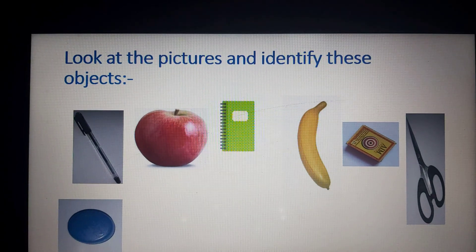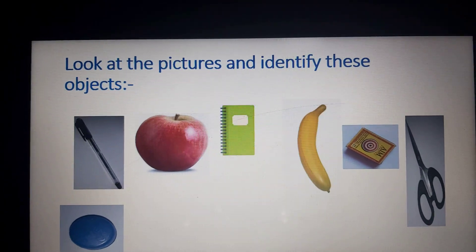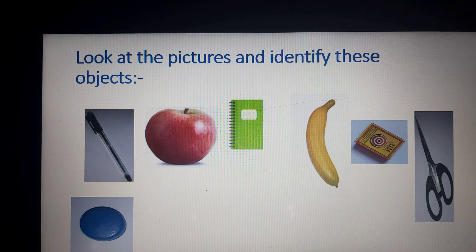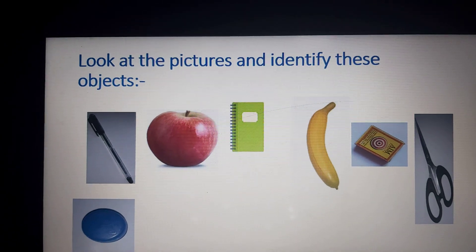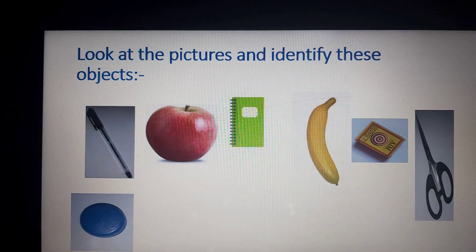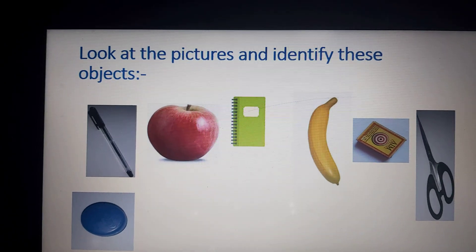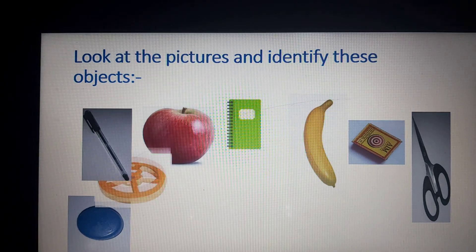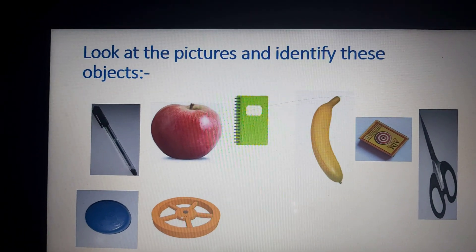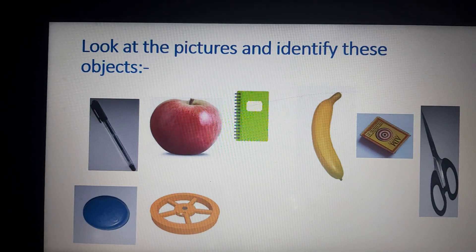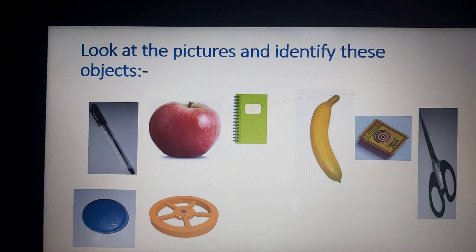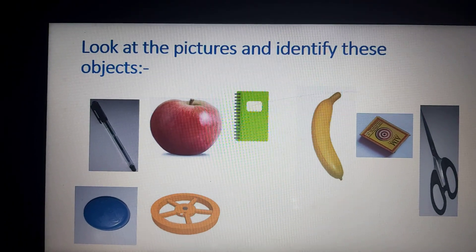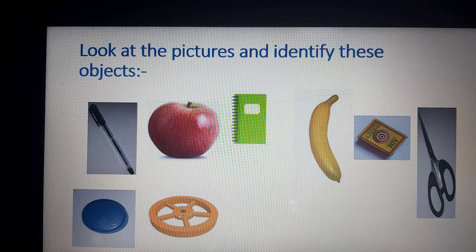What is this? Identify the picture carefully. Yes, it is a cap of a water bottle, and it is round. Move to the next one. What is this? Yes, it is a wheel. And what is the shape of the wheel? It is round.